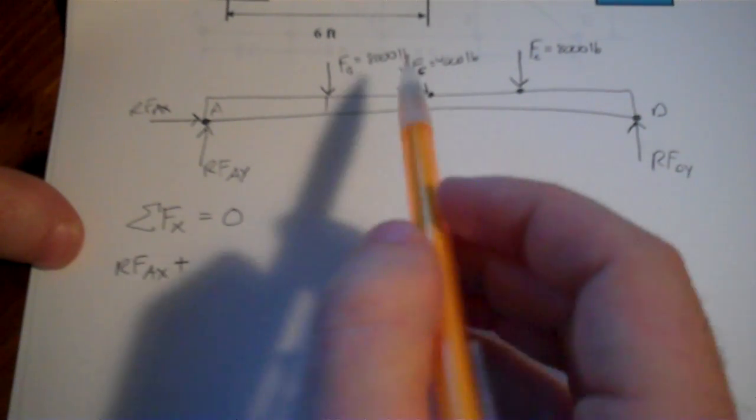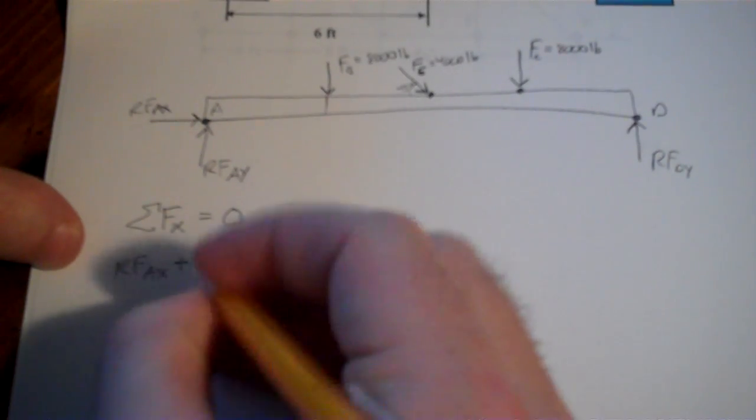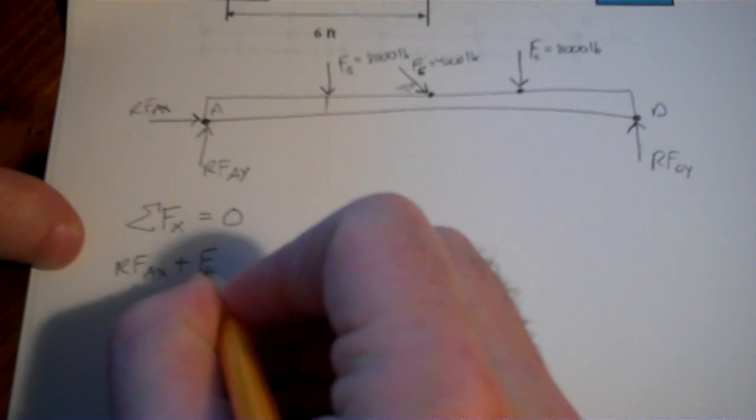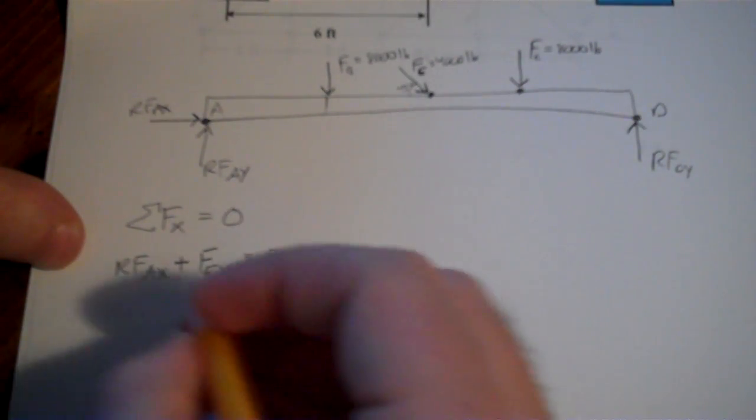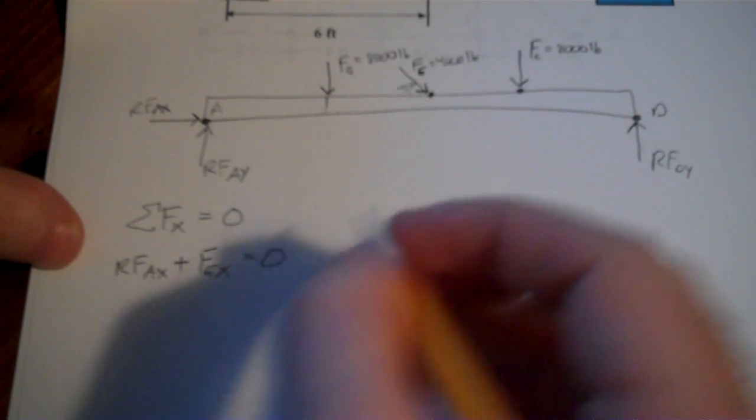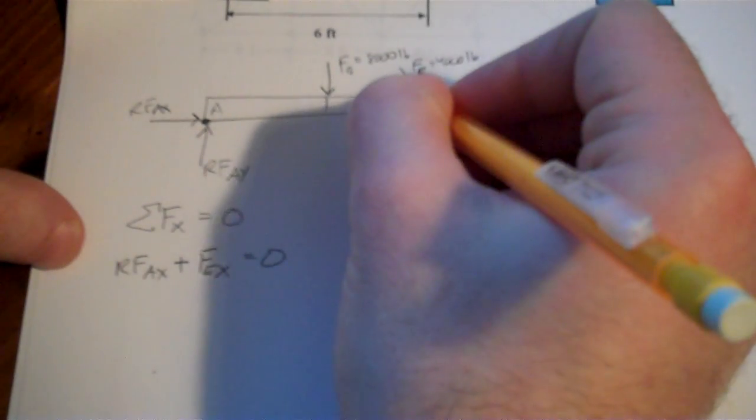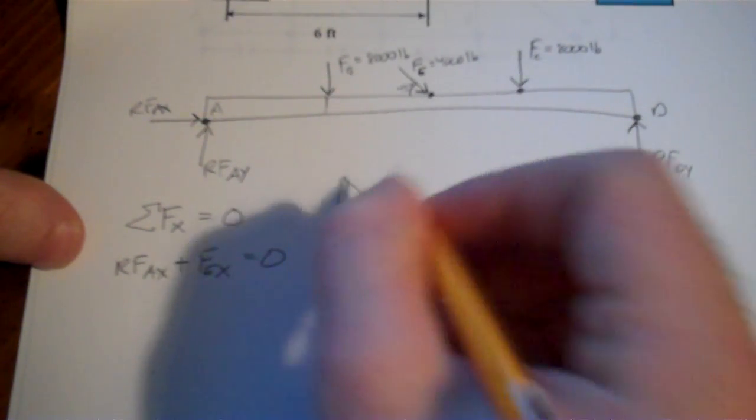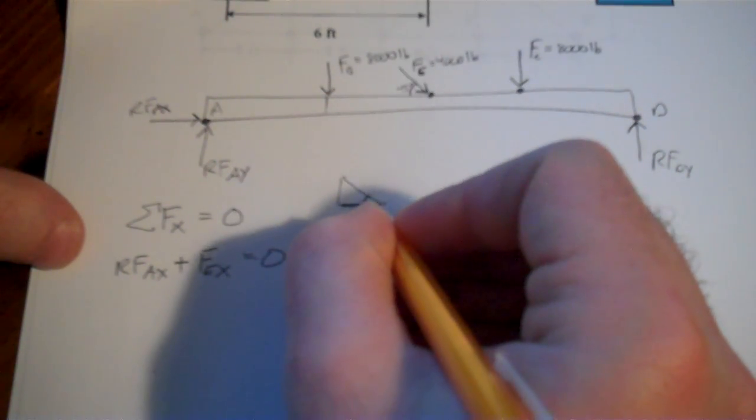Any other forces going in the X direction? Well, this one kind of is. FE will have a component in the X direction. We could probably, especially since we have an angle, figure out what that is. So I'll write FE, X equals zero. Now we don't know what any of these are, but this one we can figure out. So let's do that. FEX, since this makes a triangle like so with a 45 degree angle. If I want that X component and I'm measuring the angle from the horizontal, that's going to be the adjacent side and the hypotenuse.